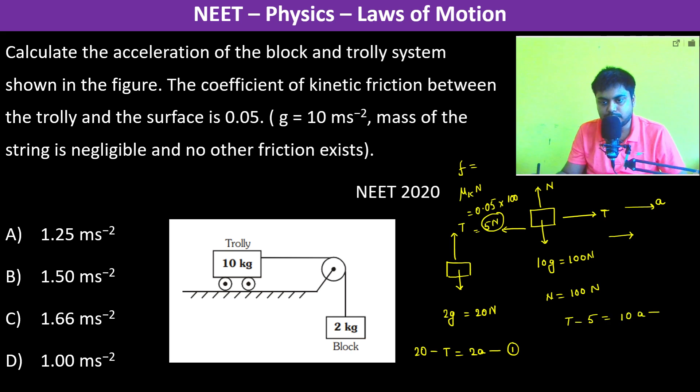Okay, so now we add both of them, so therefore we have 20 minus 5 is equal to 12A.